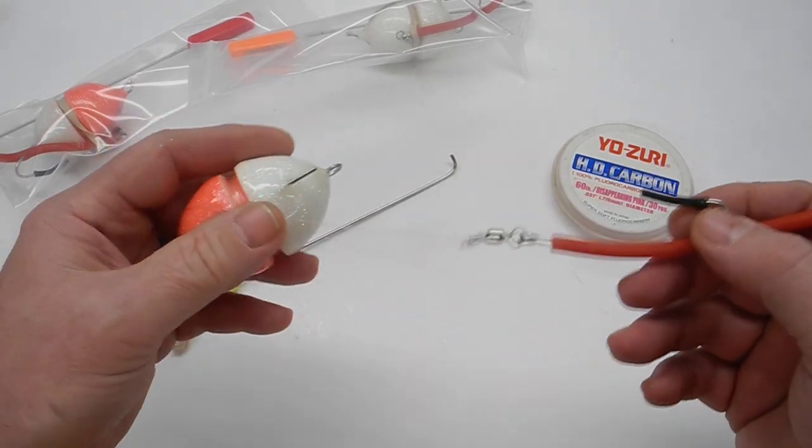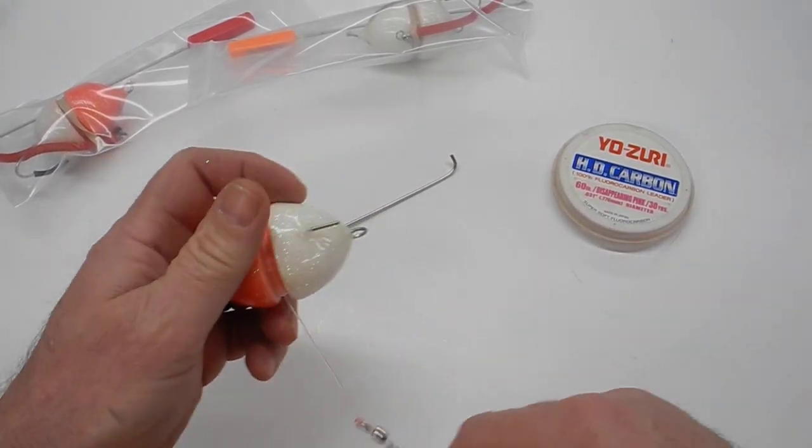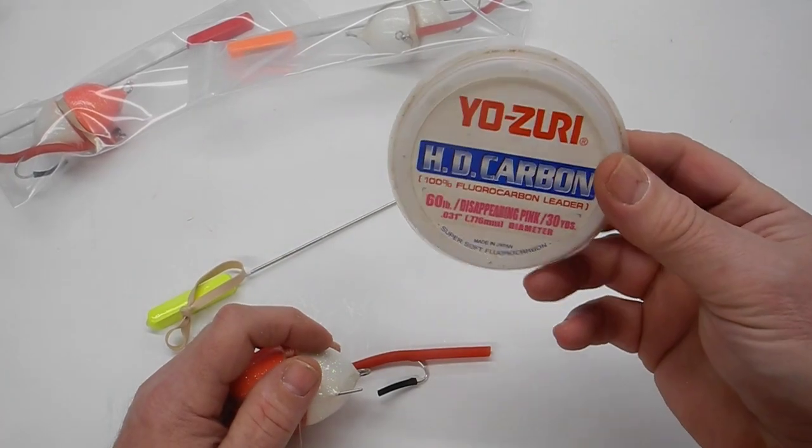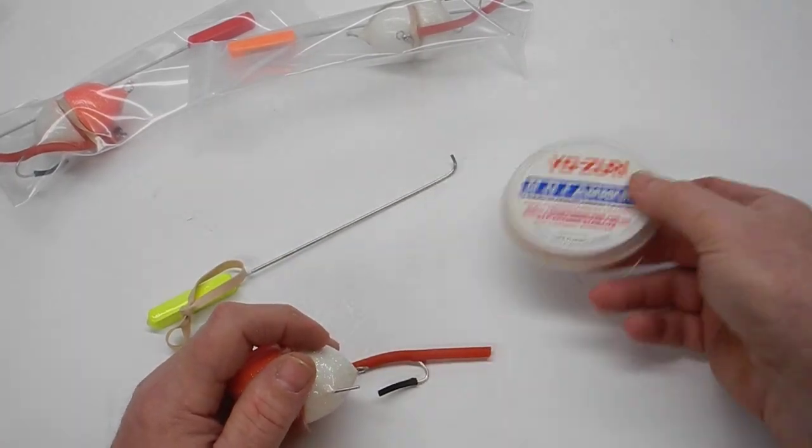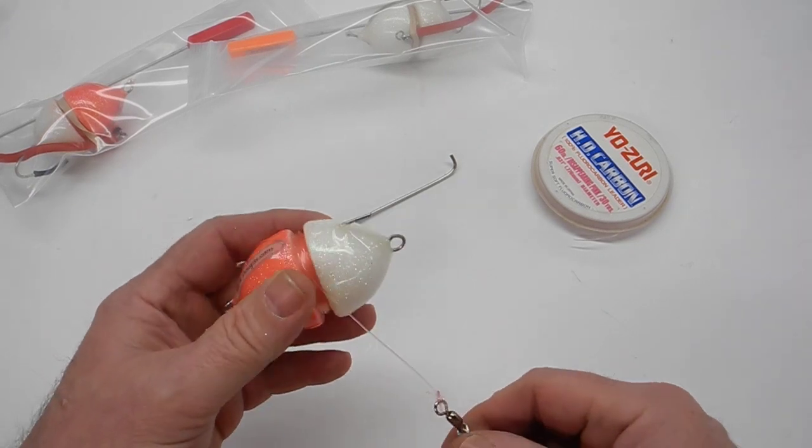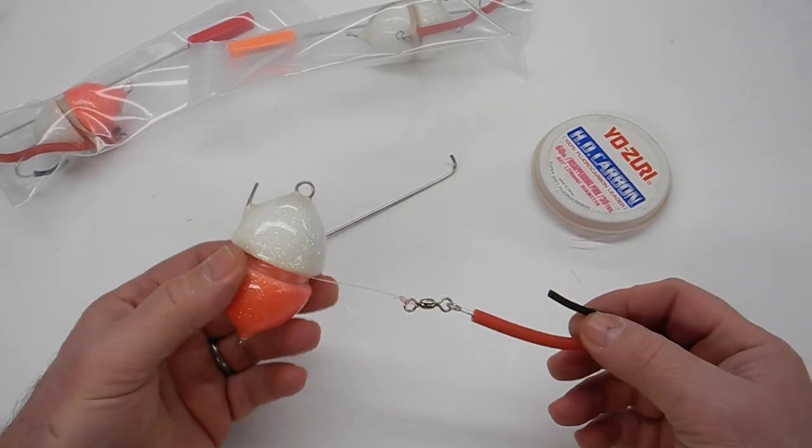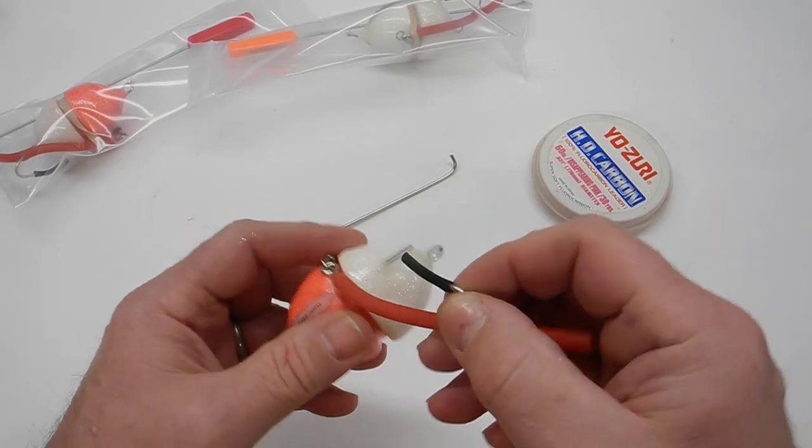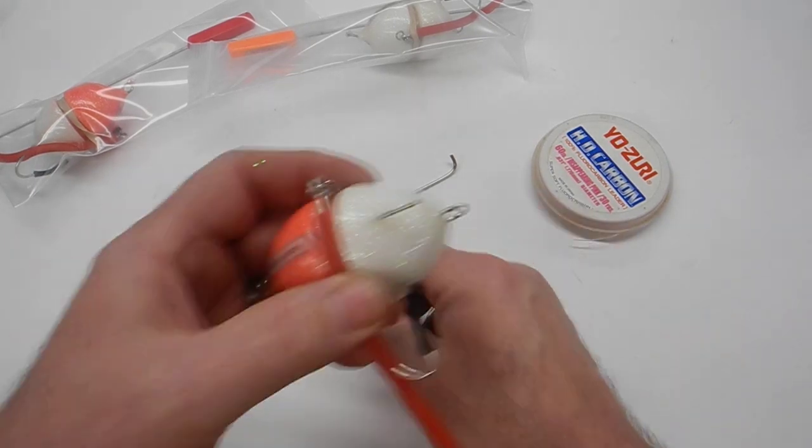So what you're going to get—it's going to come already rigged up. This is the only leader I have. This is what you're going to get. If you want it tied with whatever you prefer, you know, feel free.